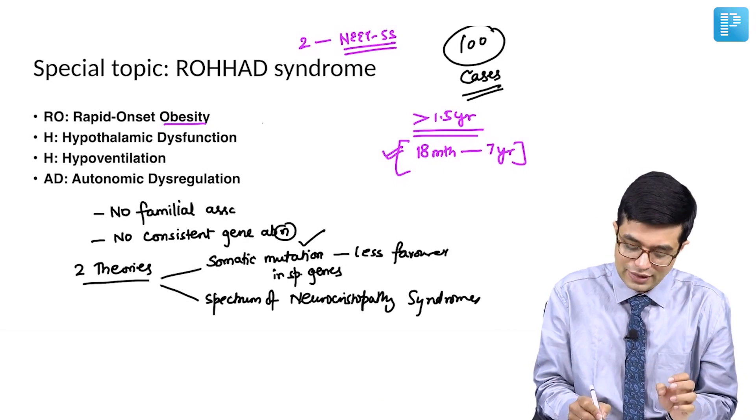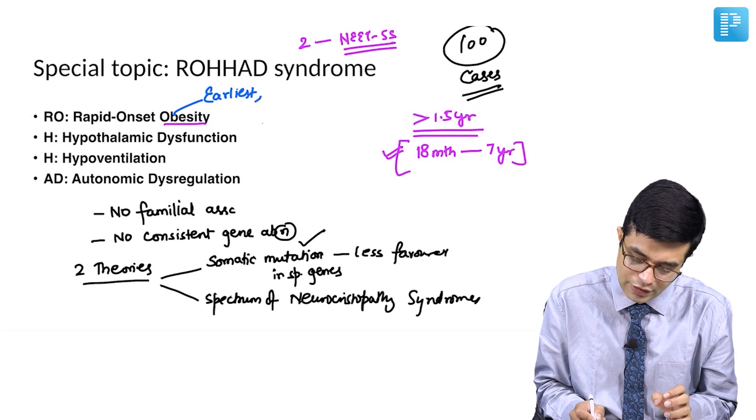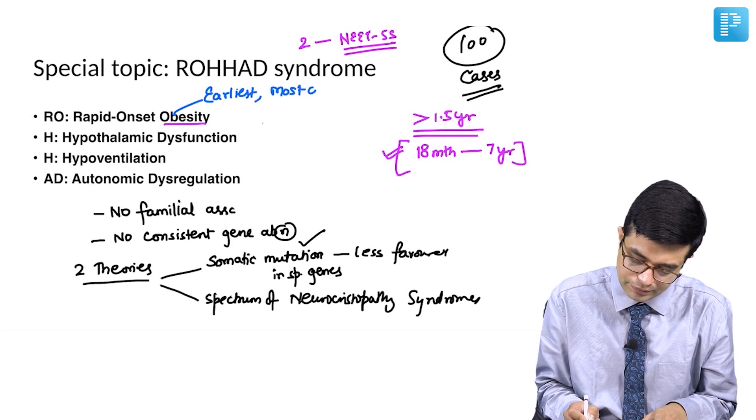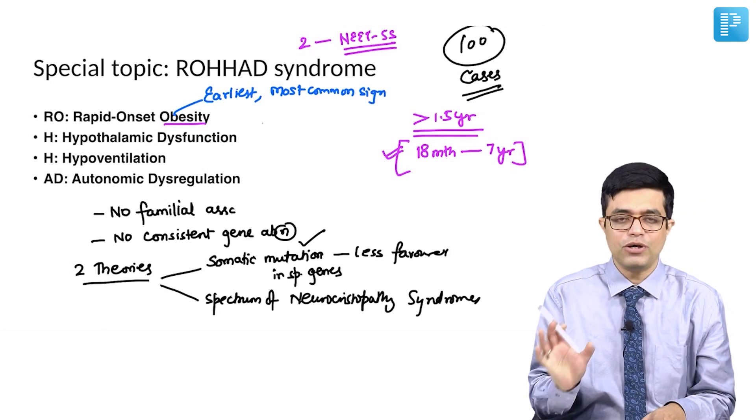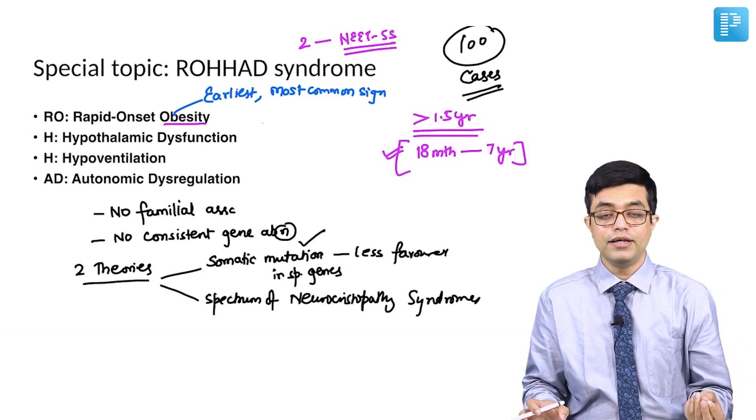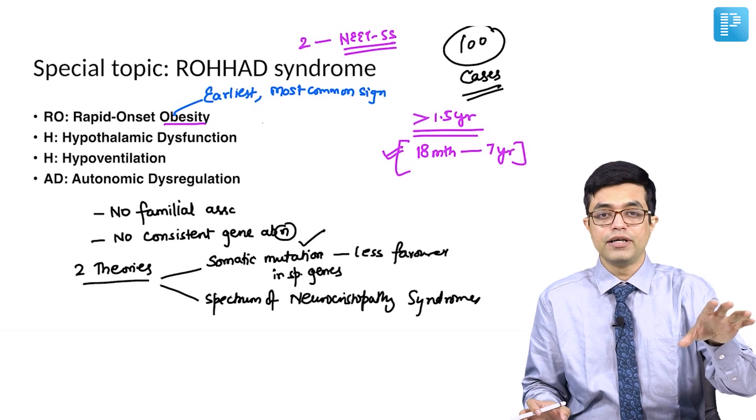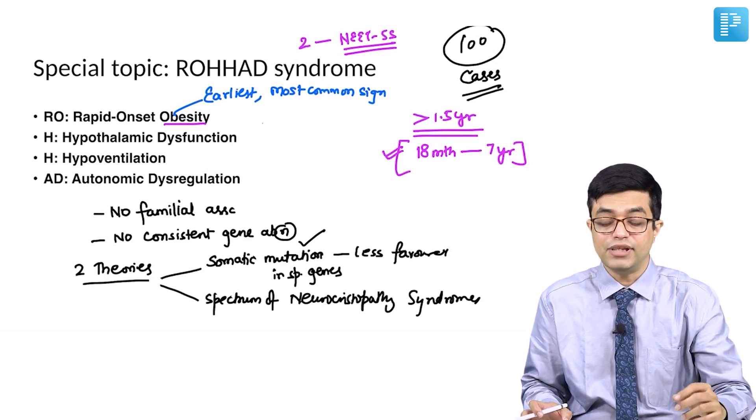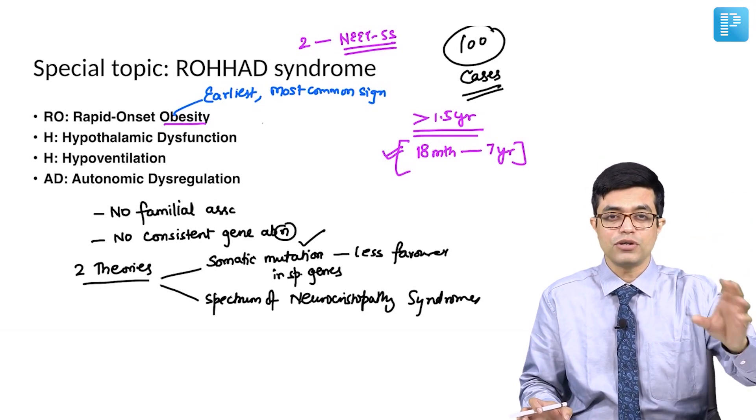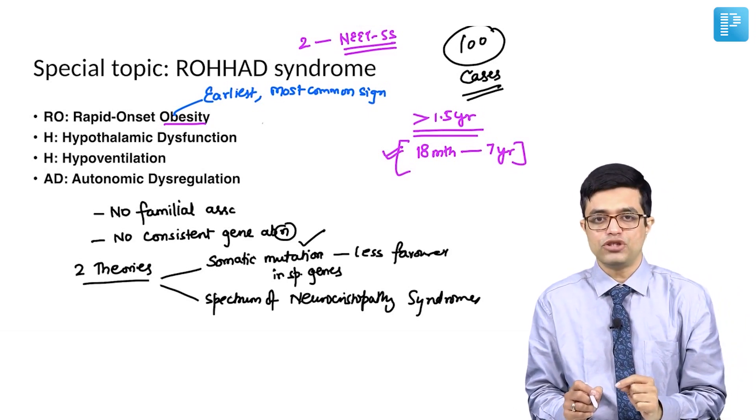Rapid onset obesity is the earliest as well as the most common sign. A totally normal child till 3 years of age, suddenly in the next one month without any reason, the child will gain say 5 kilograms. That rapid onset of obesity without any other feature is the first sign of these children.